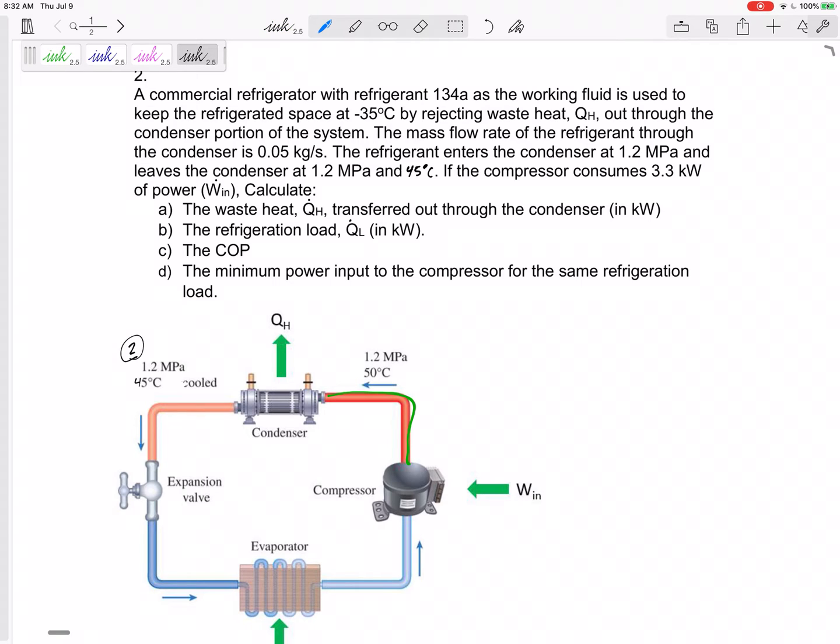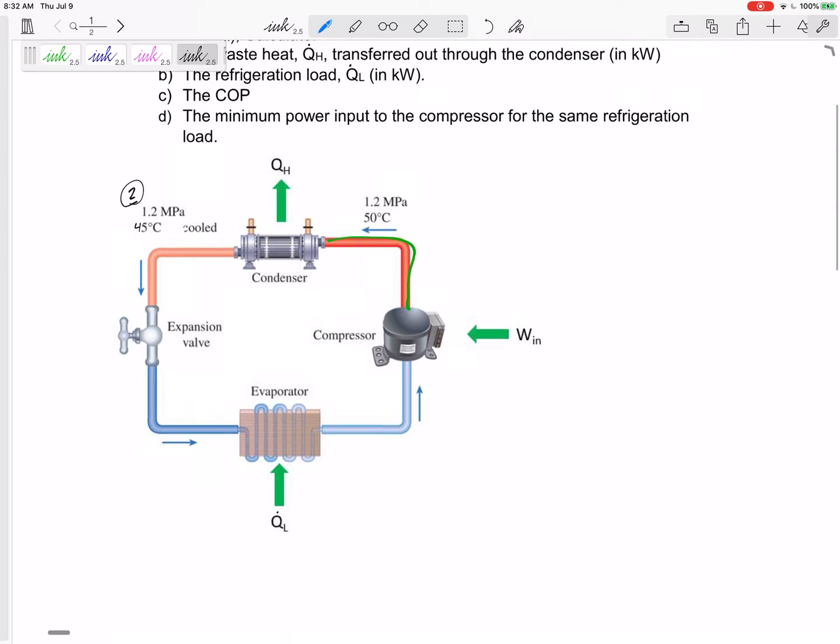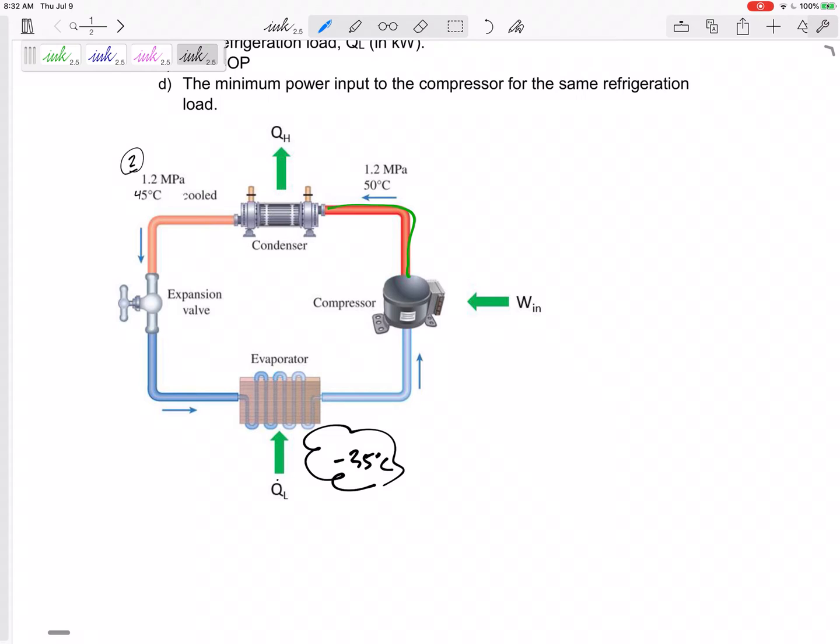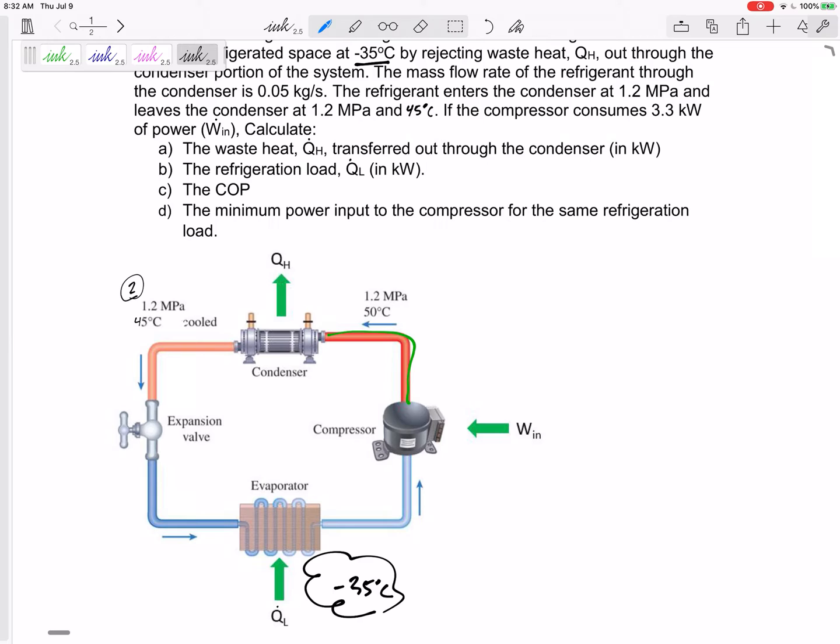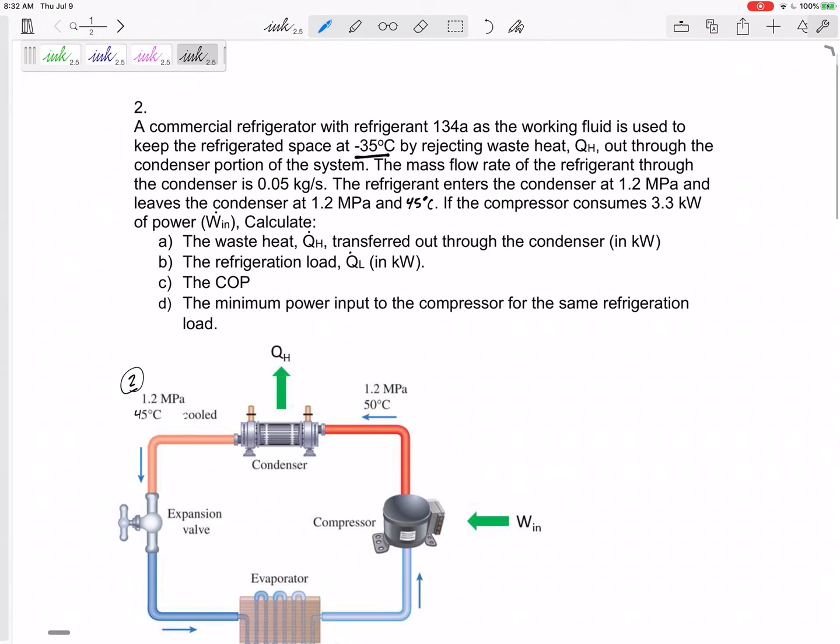So here we go. We've got a refrigerator using refrigerant. It keeps the refrigerated space at negative 35 degrees. That's talking about this outside space, negative 35 degrees C. That is not talking about the refrigerant inside of here, not talking about the working fluid. That's just talking about the refrigerated space.